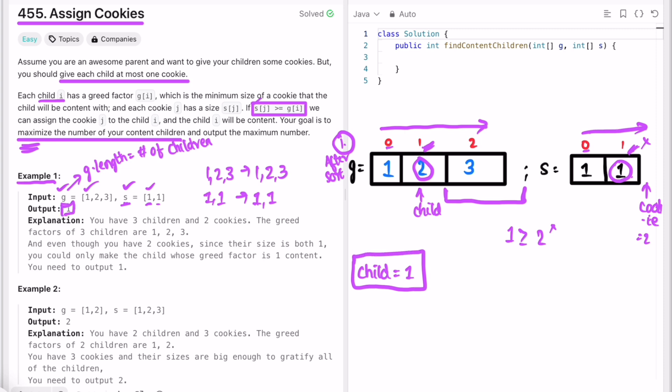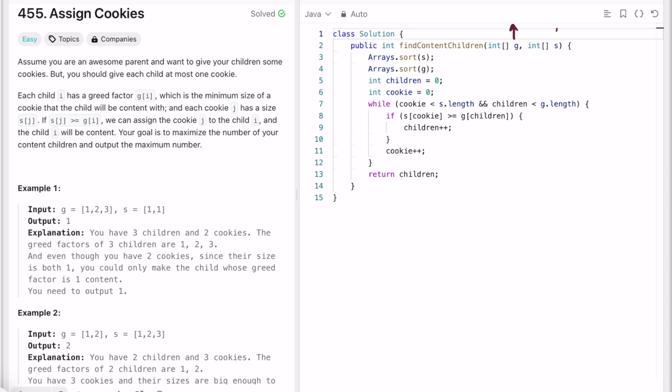Now let's implement these steps in a Java program. This is the greed array and this is the children's array. I'm sorting both arrays in ascending order and then assigning two pointers to iterate through the children and cookies. The children pointer will be used to iterate through the g array, and the cookie pointer will be used to iterate through the s array.